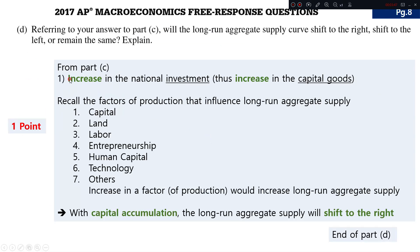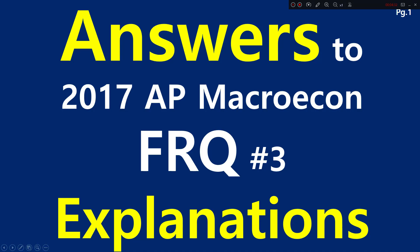Question D: from part C, we have an increase in national investment, thus an increase in capital goods. Recall the factors of production — the three major ones are capital, land, and labor. Some theories also include human capital, technology, and entrepreneurship. With any increase in a factor of production, long-run aggregate supply increases. So with capital accumulation in this case, the long-run aggregate supply will shift to the right. That concludes the answers to 2017 AP Macroeconomics FRQ No. 3. Thank you.